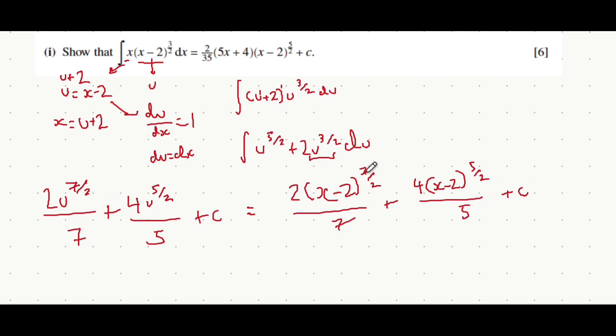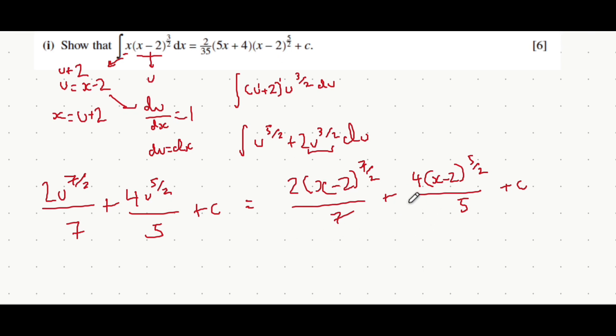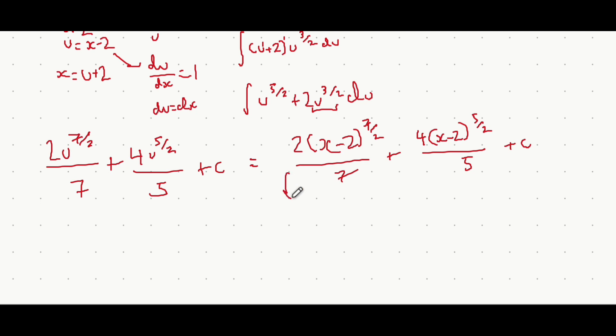Now, this is all correct, but what we want to do is we want to compare it to the final answer. We see that there's a common denominator of 35 from both terms. So let's make both these fractions out of 35. You can multiply the top and bottom of this fraction by 5, so that it becomes 10 lots of x minus 2 all to the power of 7 over 2 over 35. I'm not going to write over 35 here because I'm going to write a big fraction all over 35, because once the denominators are the same, you can just add the numerators together. To make this second fraction out of 35, you multiply 7 to the bottom, so you also multiply 7 to the top. 4 times 7 is 28, so that becomes 28 lots of x minus 2 to the power of 5 over 2.